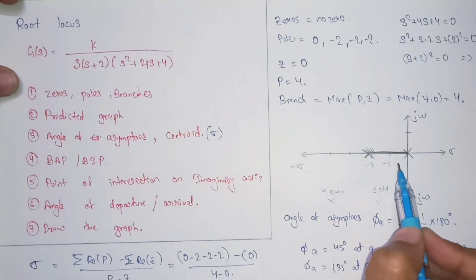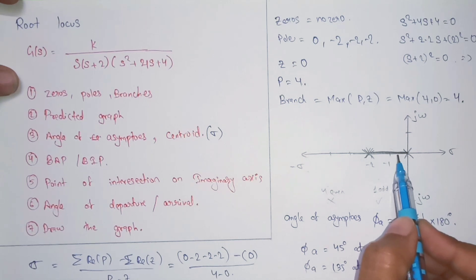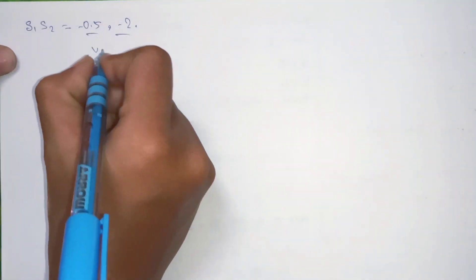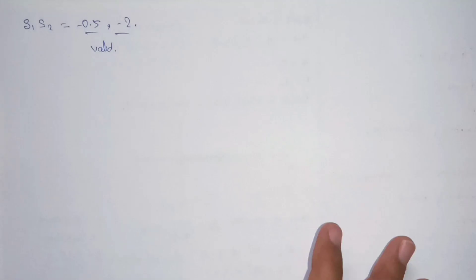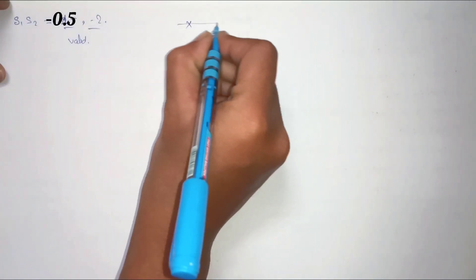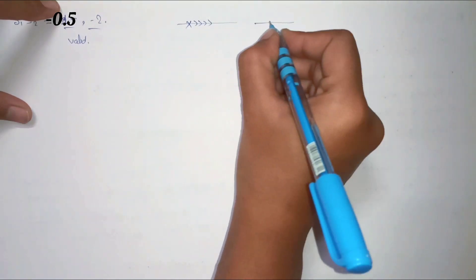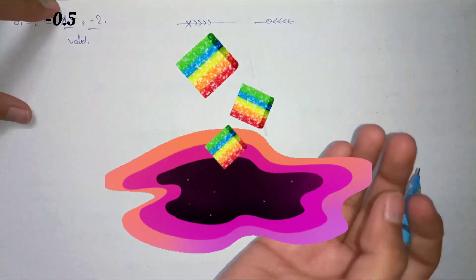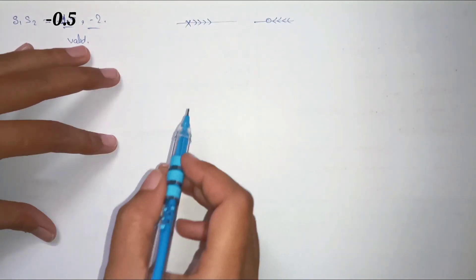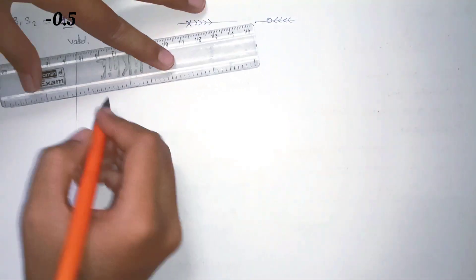Now check which of these points are valid on the root locus. Minus 0.5 lies on the root locus, so it is valid. Minus 2 is also on the root locus, so it is also valid. Both roots are valid breakaway points. To distinguish: if there is a pole at that location it is a breakaway point — arrows go away from it; if there is a zero it is a break-in point — arrows go into it like a black hole. So we have breakaway points at minus 0.5 and minus 2.